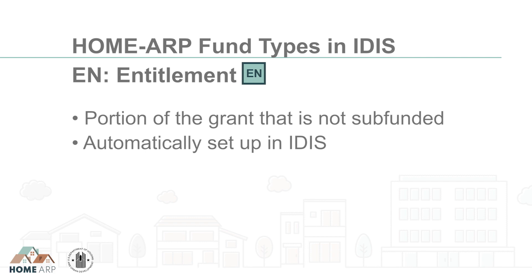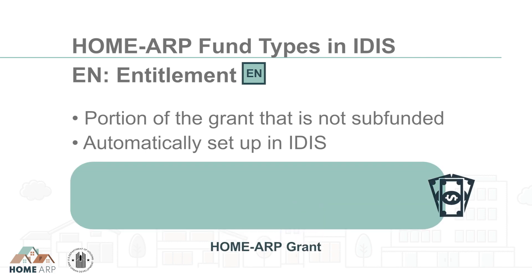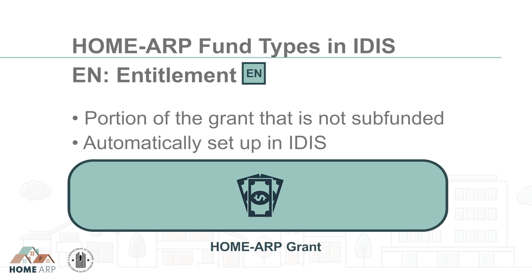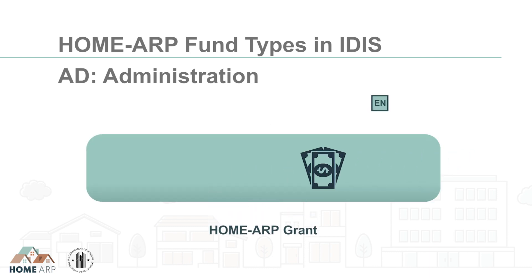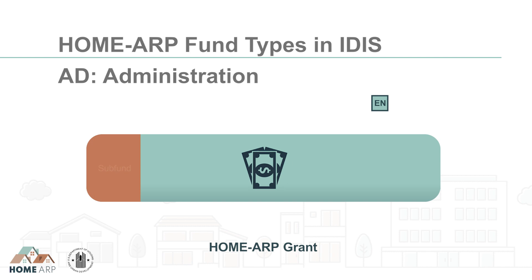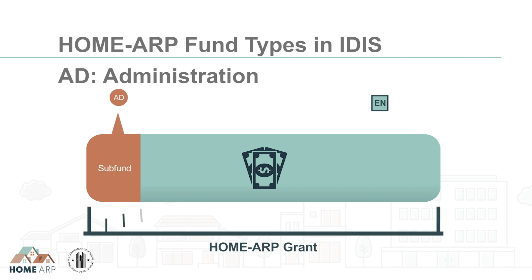EN, Entitlement, is automatically set up in IDIS and is the portion of the HomeARP grant that is not otherwise subfunded. AD, Administration, is also automatically set up in IDIS. AD funds are automatically capped at 15% of the total HomeARP grant. As a reminder, the AD subfund is initially limited to 5% of the HomeARP grant when the HomeARP grant agreement is first signed. This subfund will be authorized for up to 15% of the grant after the PJ's allocation plan is accepted by HUD and the grant is fully contracted.